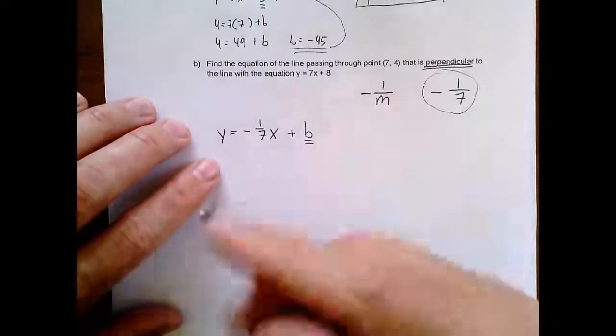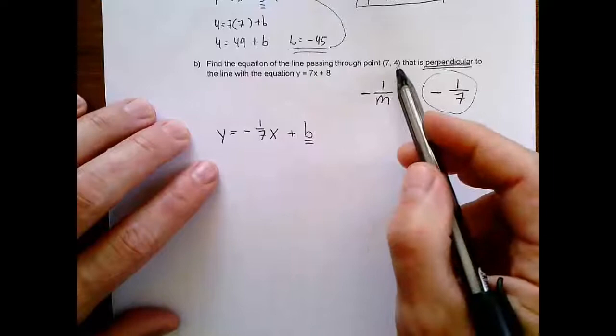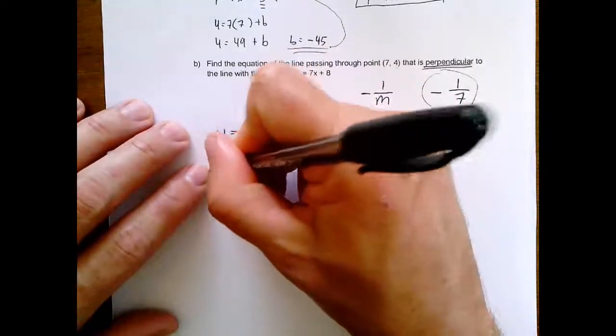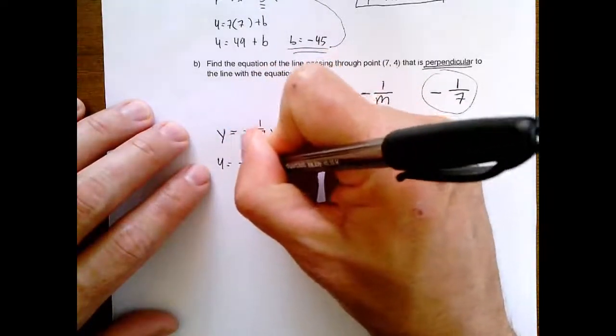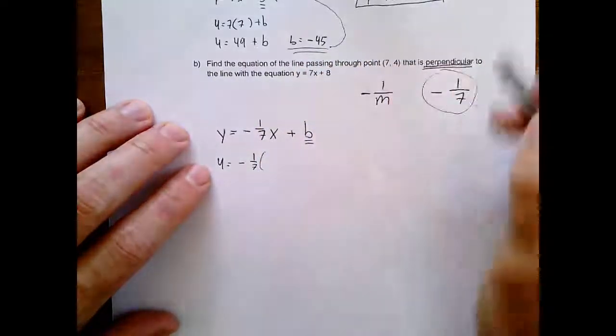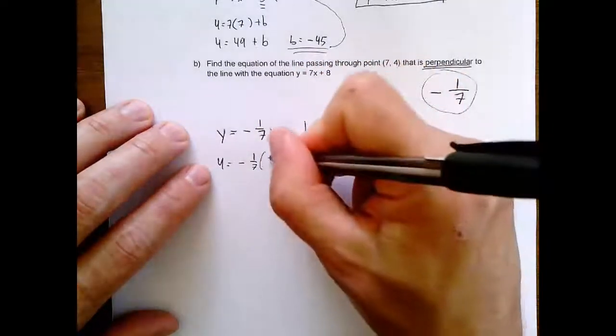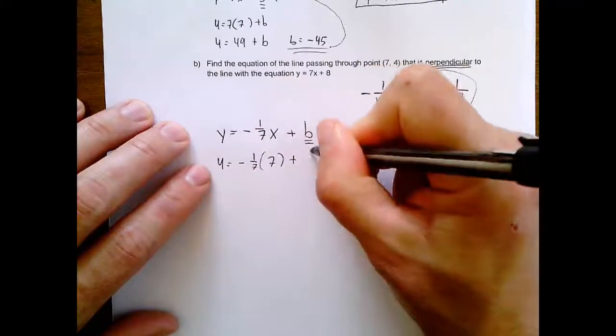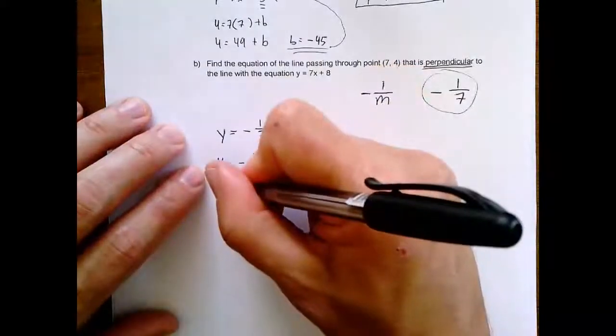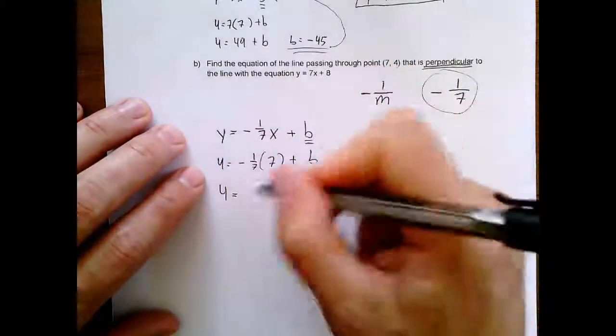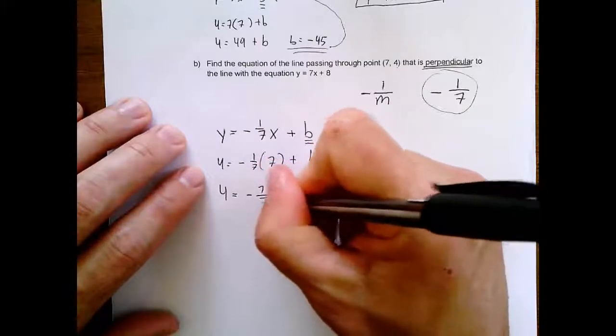Using the same idea of just plugging in the x's and y's to isolate the b, and we're just pretty much doing the same thing we did a second ago. So my y is 4. So I get 4 equals negative 1 seventh. And then my x is 7 plus b. Simple multiplication.